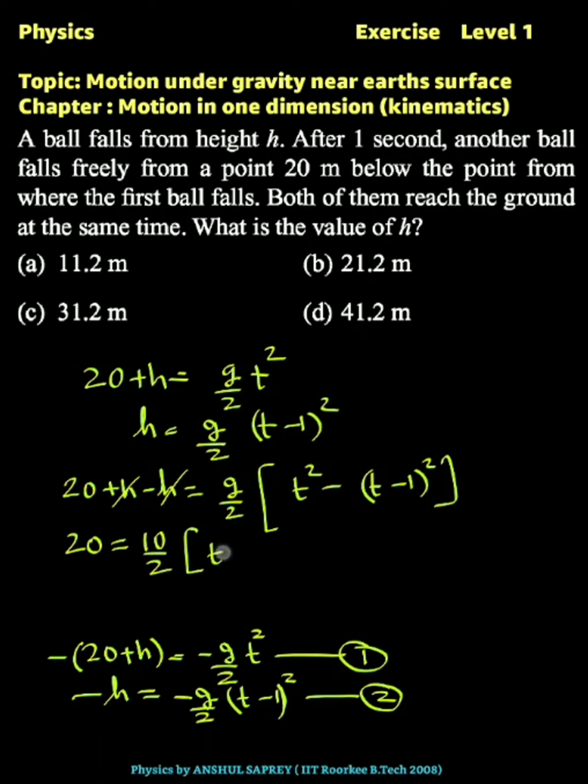So 20 equals—put value of g as 10—so 10 by 2 times, use a minus b into a plus b: (t minus t minus 1) times (t plus t minus 1). So 4 equals 1 times (2t minus 1), or 2t equals 4 plus 1, that is 5. So time equals 5 by 2.